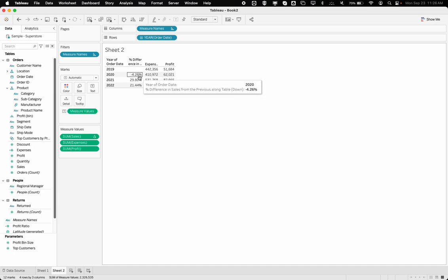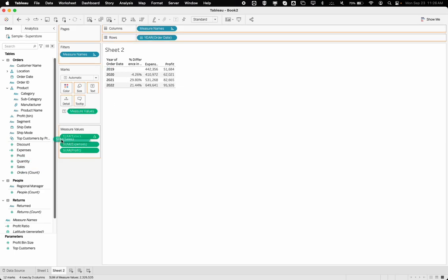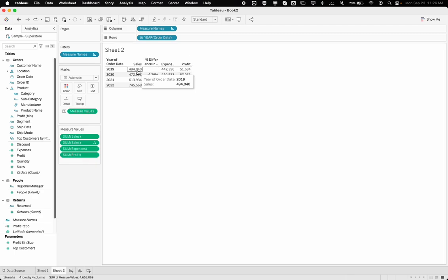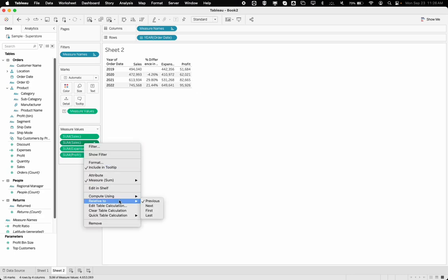And now it's going to be taking the percent difference from the prior year. So if I was to bring sales here again, you can kind of see side by side. So this 472,000 is a 4.26% reduction as compared to 2019.